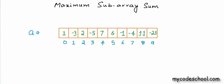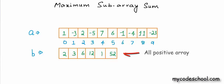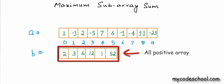Now let me take one more example to make things more clear. B is an array with all negative values. Therefore, its MSS would be minus 1, its highest value. Instead, if the array contains all positive values, we will have the whole array as our MSS.